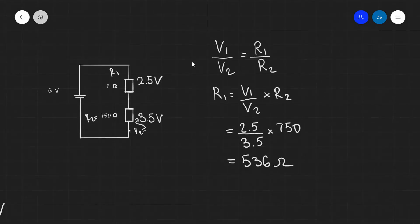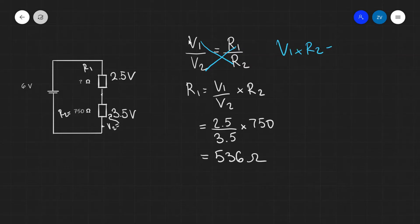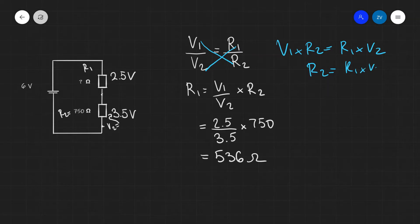Just as a little aside, if you're struggling to rearrange this equation, one thing that you could do is cross multiplication. So essentially, this times this will equal this times this. In other words, V1 times R2 will be equal to R1 times V2. And then depending what we want to rearrange for afterwards, we could do that. For instance, if we're interested in R2, we can just say that R2 will be R1 times V2 divided by V1. So this was just a quick little exam tip.